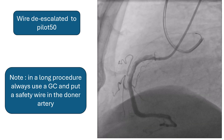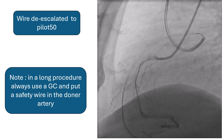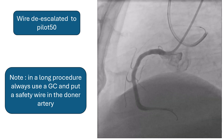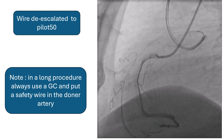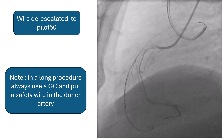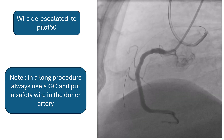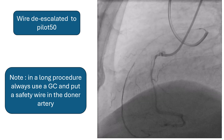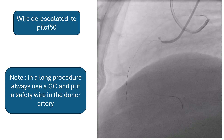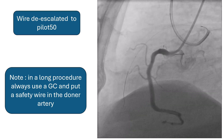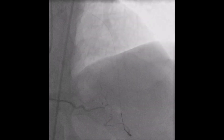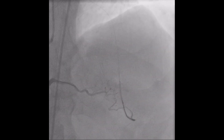A note about dual injection: in a long procedure, always use a guiding catheter and put a safety wire in the donor vessel, so that if anything happens you have enough time to pass a balloon or a stent to treat any dissection in the donor vessel. This is another review to confirm the intraluminal course of the wire.